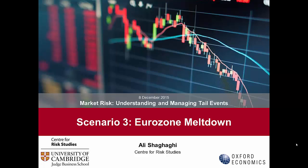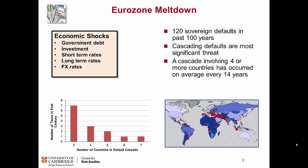The third scenario is the cascading default of several Eurozone countries. Default is something we've seen in some historical events, although it might be seen as not an event that has happened quite severely. In this scenario, we look at various economic shocks and, based on these, we look at the exit of several European countries, starting with the exit of Italy.